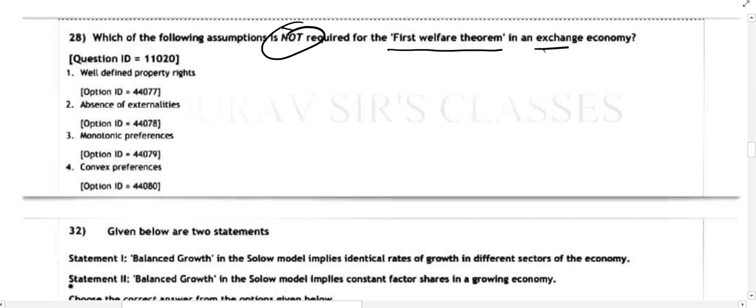Next is question 28: which of the following assumptions is not required for the First Welfare Theorem in an exchange economy? To answer this, we need to know the definition of the First Welfare Theorem.